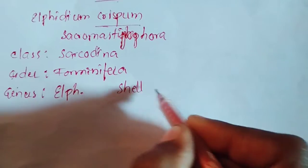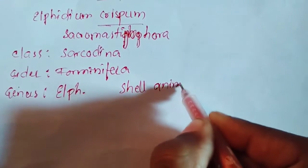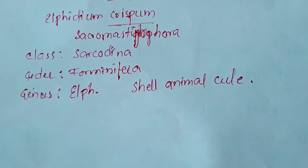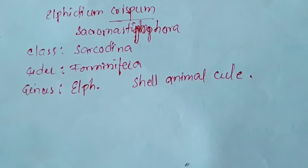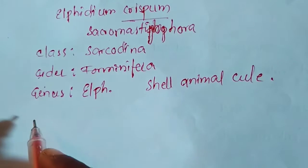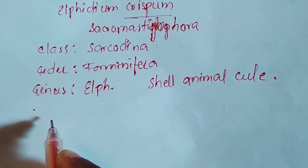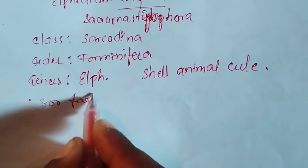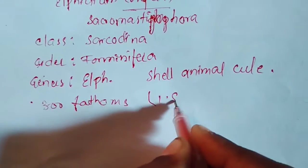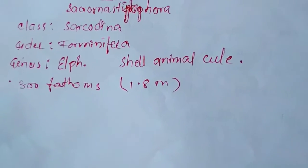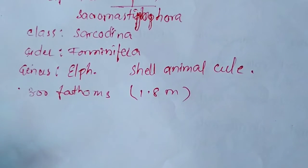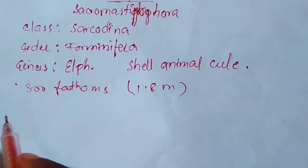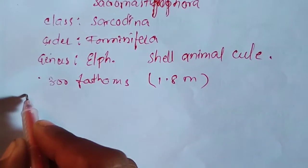Elphidium crispum are marine organisms usually present at the bottom of the sea. They creep near seaweeds and lie at a depth of 300 fathoms, where one fathom equals 1.8 meters. These organisms live under the sea at the bottom of the sea.